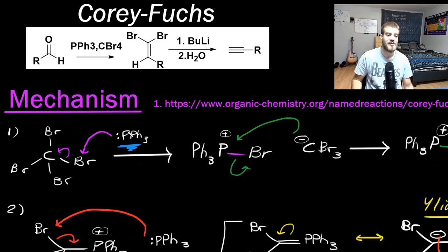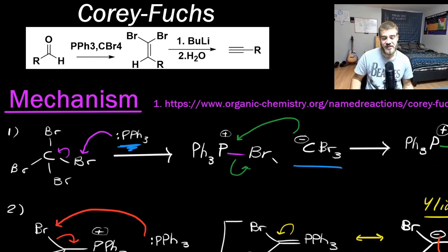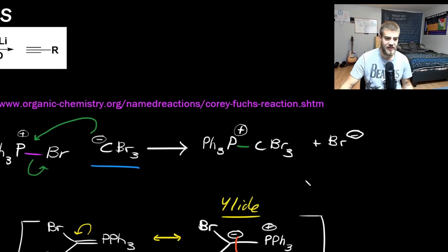First of all, triphenylphosphine attacks carbon tetrabromide on one of its bromine atoms. This CBr bond goes to the carbon and creates this carbanion, which is stabilized by the three bromines, which are electron-withdrawing. And then you get also this positively charged phosphorus, because you just made a fourth bond. So your carbanion can now attack the phosphorus, and you get this intermediate, and you release a bromide atom.